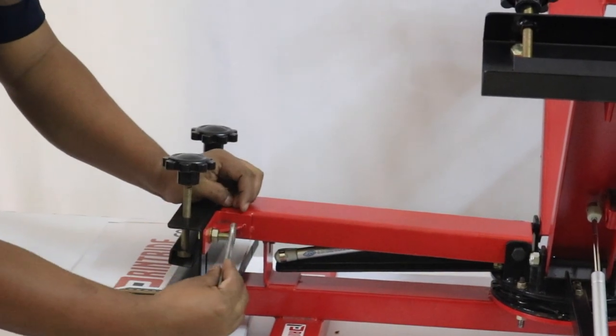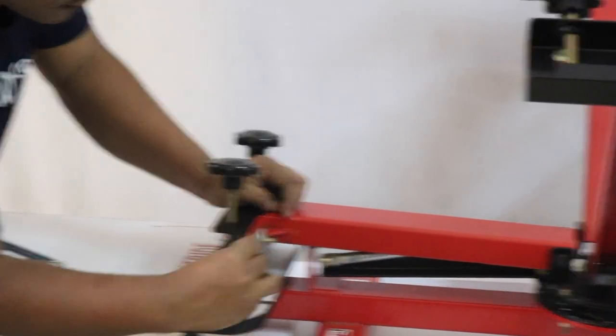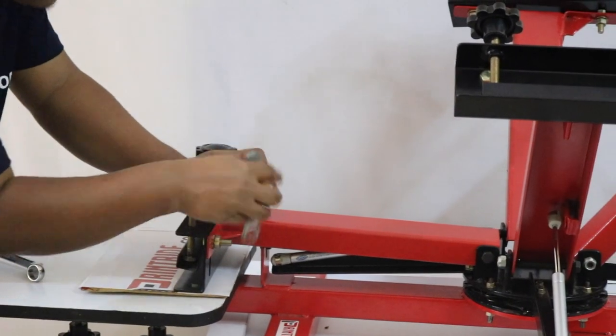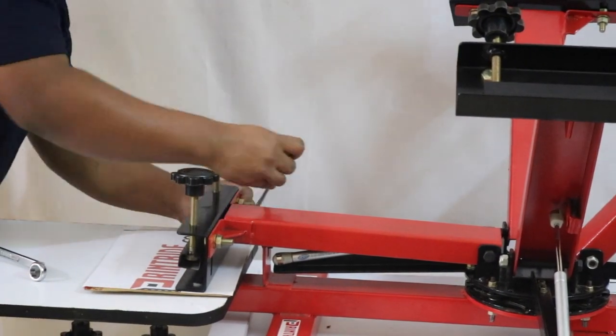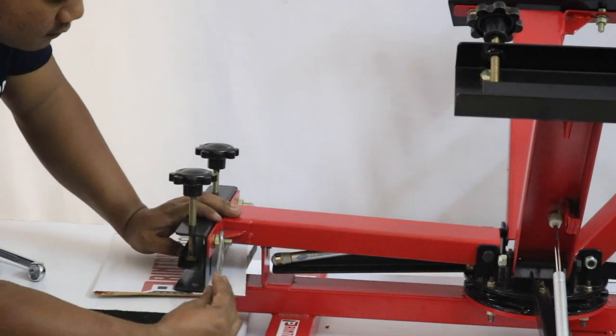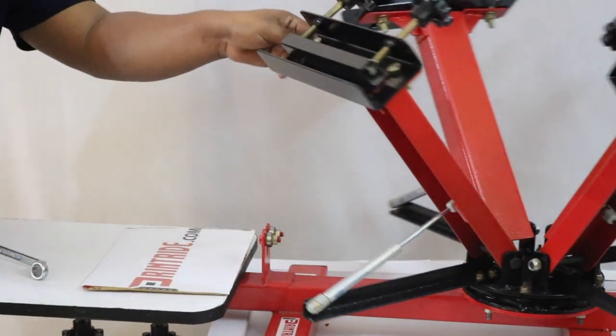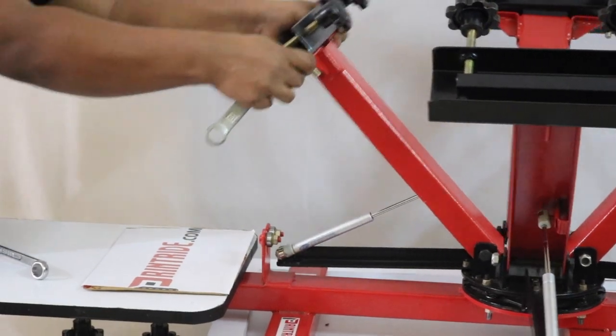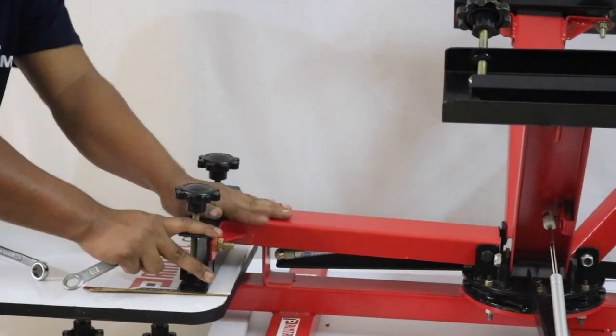So this is the off contact knob. You have to adjust the off contact knob there. It's done. You have to do the same way for all the arms.